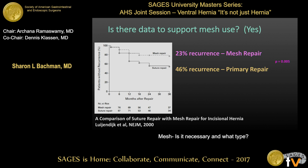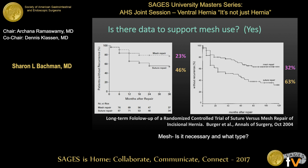They had that 46% recurrence rate we saw in the prior slide — mesh reduced it by half. Because they have an excellent database and a small population, they were able to follow those patients out to 10 years. They found 126 of the original 200 patients. Over time, a couple of things happened: the primary hernia rate increased from 23% to 32%, and that ratio held — the recurrence rate was twice as high in the group that had no mesh versus the group that had mesh. A 63% recurrence rate with suture repair at 10 years — you might as well have not had surgery if you're looking at odds.